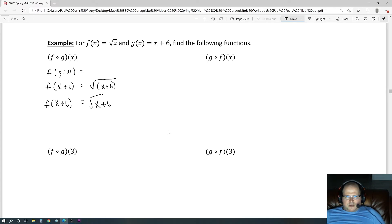What about the other one, g of f(x)? Put f(x) inside. What is f(x)? f(x) is √x, so we end up with √x + 6. That's it.